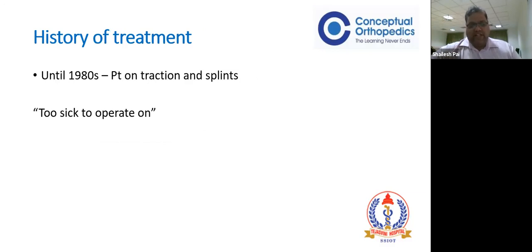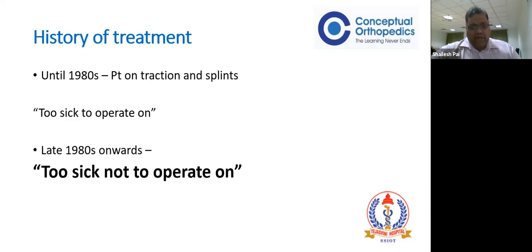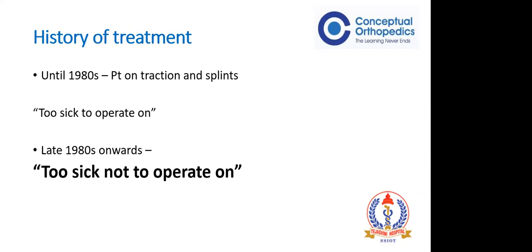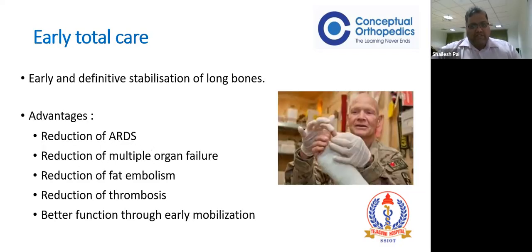Why are these concepts required? Going back in history, until about the 1980s, most patients with fractures were put on traction and splints - conservatively managed, because results with surgical techniques were poor and implants were of poor quality. They were considered too sick to be operated upon. But from 1980 onwards, with better advancement in anesthetic, rehabilitation, and ICU techniques, surgeons became more confident. The phrase changed: these patients are too sick not to operate on - meaning if we don't operate a polytrauma patient, they will not survive. This concept from 1980 onwards was by Dr. Larry Bone from the US.